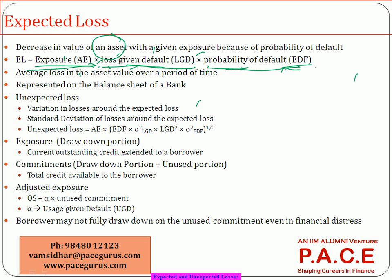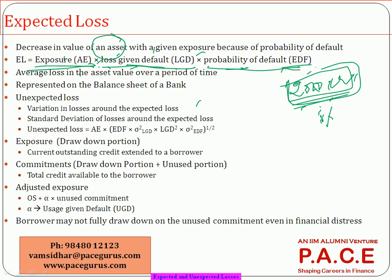The three components are: probability of default, loss given default, and the exposure — how much loan has been given by the bank to the parties. For example, if the bank has given 2000 crores of loans, that's the exposure. If 2000 crores is expected to be collected this year in the form of interest or principal repayments, and the bank expects that 1 percent of that will not be collected and will be considered bad debts.